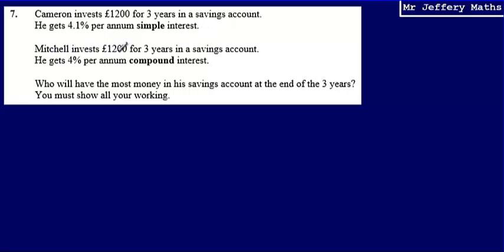Then we're told that Mitchell invests £1,200 for three years, so the same amount for the same period of time, but he's getting 4%, a slightly lower percentage per annum, but he gets compound interest. We're asked who will have the most money in his savings account at the end of the three years.